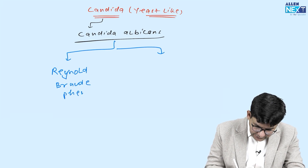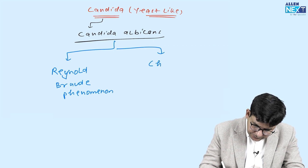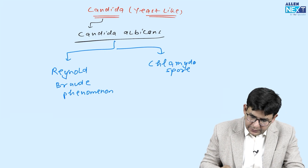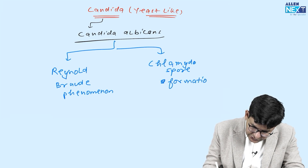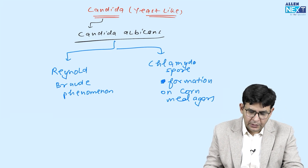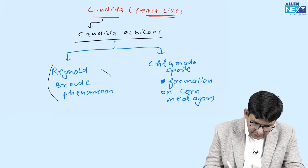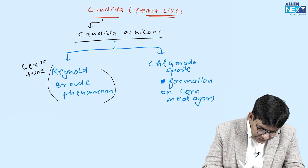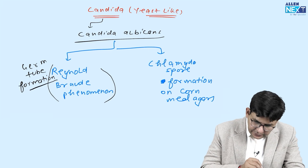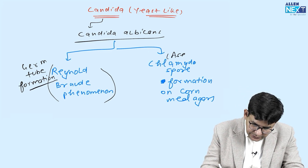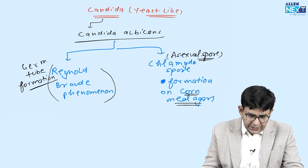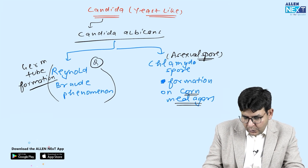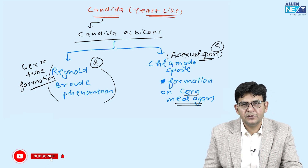The two phenomena are: one is Reynaud's broad phenomenon, and another one is chlamydospore formation. This chlamydospore formation happens on cornmeal agar media. Reynaud's broad is termed as germ tube formation method, whereas chlamydospores are asexual spores produced on a nutrient-deficient media named cornmeal agar.